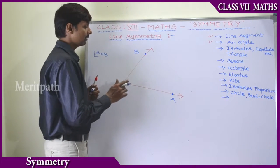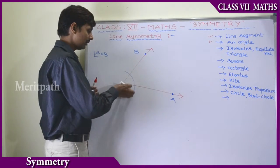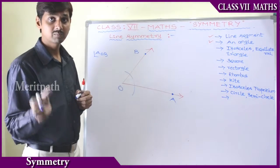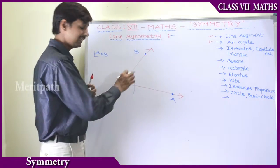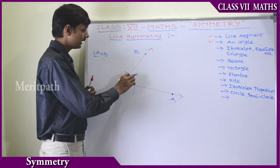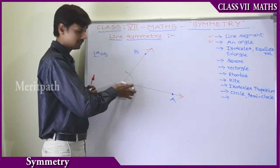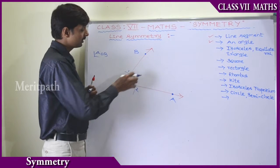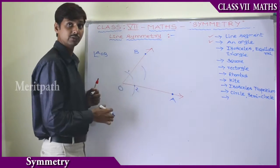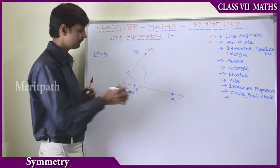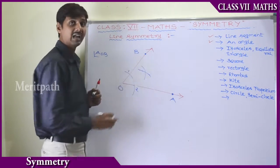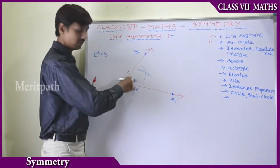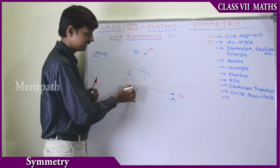So take a compass using point O. Let's take an arc using 1 or 2 cm radius. As per our intermediate, we have taken 2 cm radius. Using point O we made an arc, and we got two points here - point 1 and point 2.